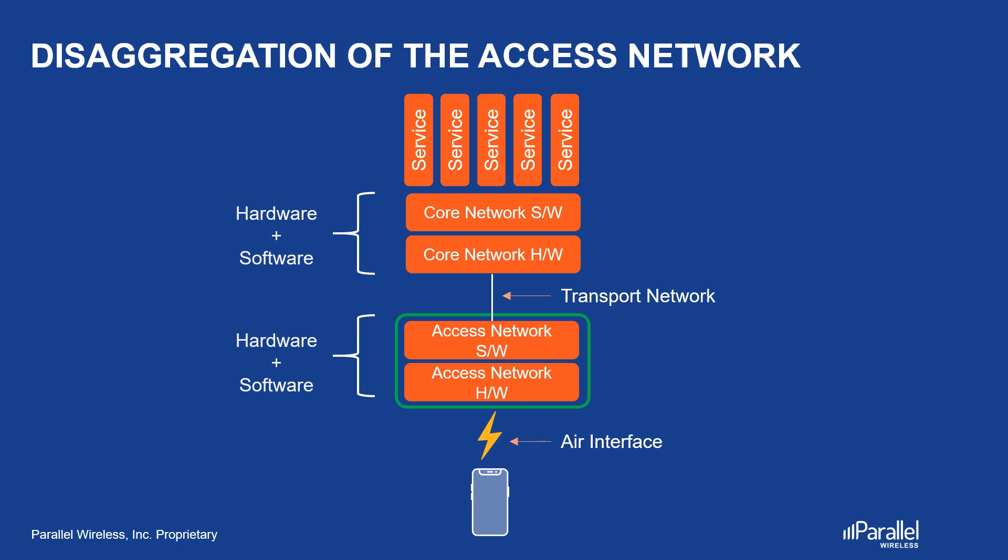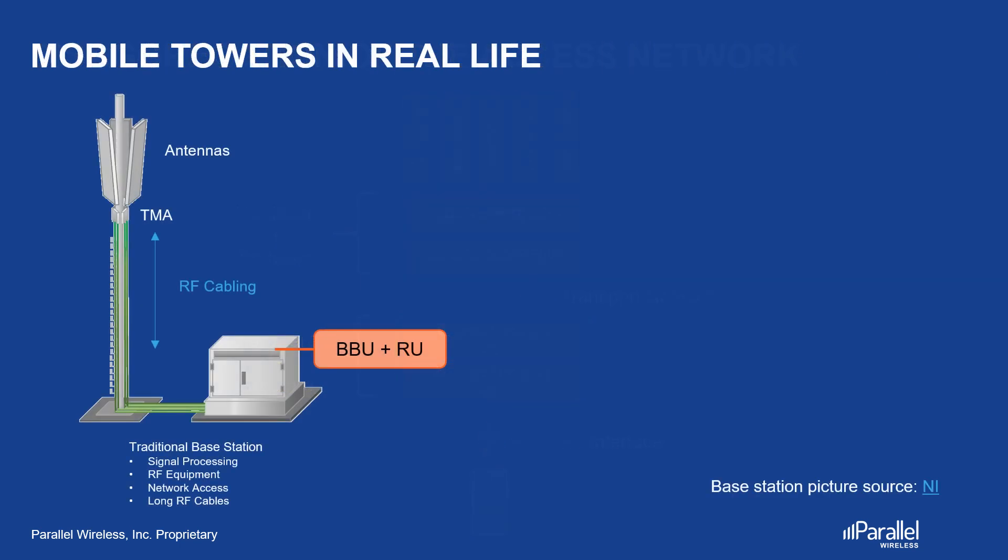In this video, we will focus on the radio access network, or RAN. This is a picture of how mobile towers used to look in the 2G and 3G days. All the electronics used to be in one or more cabinets at the bottom of a mast or tower. The RF cables would then run to the antennas on top of the mast. While this was a simple approach, the RF signal attenuation in the RF cable was a big problem.